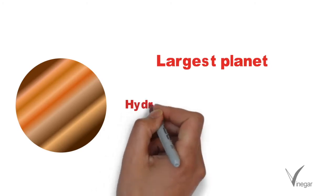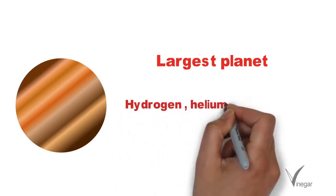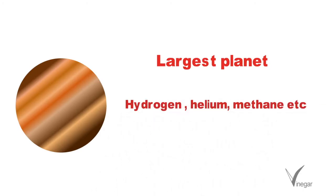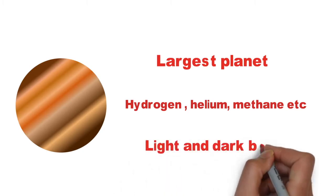Next comes Jupiter which is the largest planet of our solar system. Here the surface is formed from many gases like hydrogen, helium, methane, etc. It is distinguishable because of its light and dark bands and it also has many satellites.